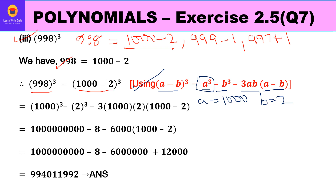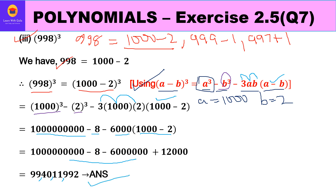So we write: 1000³ - 2³ - 3 × 1000 × 2 × (1000 - 2). Now 1000³ gives 1,000,000,000 (nine zeros); 2³ = 8; 3 × 1000 = 3000, times 2 = 6000; then 1000 - 2 = 998 inside the bracket. Opening the bracket and solving, you get a very large figure: 994,011,992 is your answer.